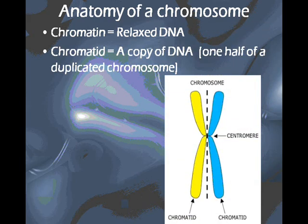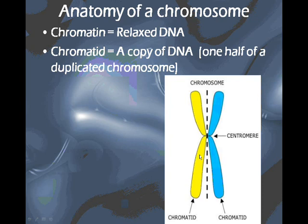Once that DNA condenses, it turns into a chromosome. And when it's duplicated, we refer to a chromosome as having two chromatids, sometimes called sister chromatids. Each chromatid is an exact copy of the other one. So this yellow half of the chromosome — that's one chromatid — is an exact copy of the blue side, which is another sister chromatid. They are attached together at the centromere, as shown in this diagram.